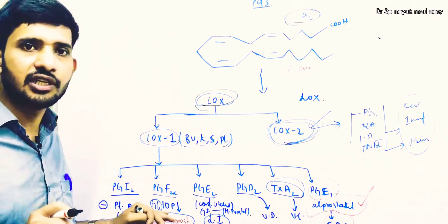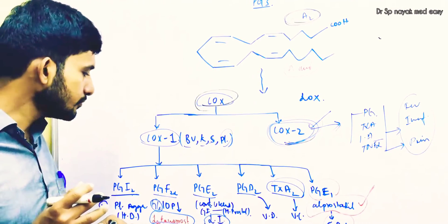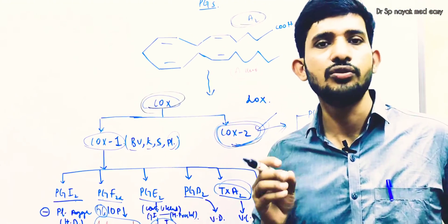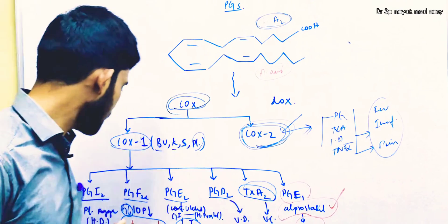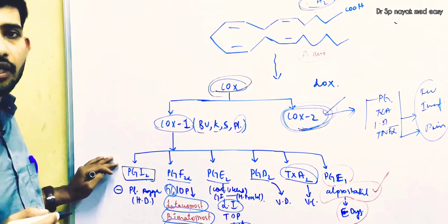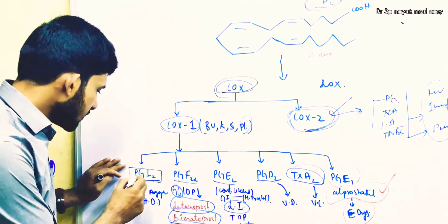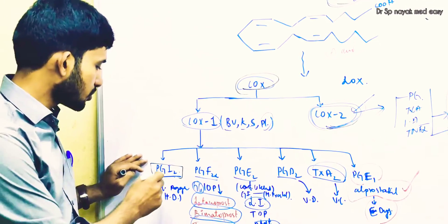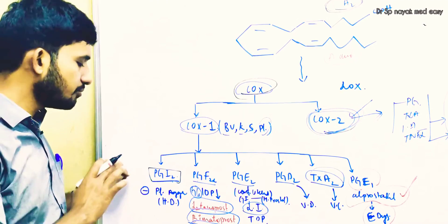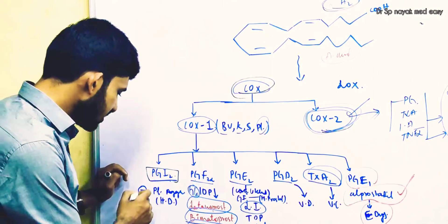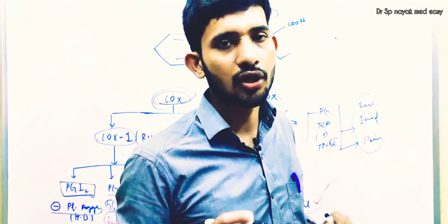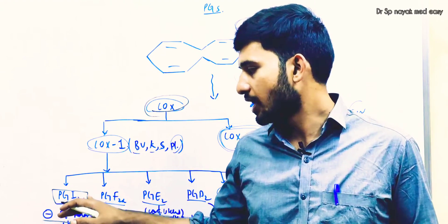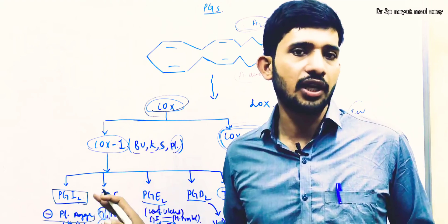You should understand these specific prostaglandins and their specific actions on different tissues, as there are drug analogues for each. Prostaglandin I2 is a very commonly seen prostaglandin in the body. It is an inhibitor of platelet aggregation — this is the major pharmacological action of prostaglandin I2. Because of this action, prostaglandin I2 analogues are used during hemodialysis to reduce platelet aggregation.